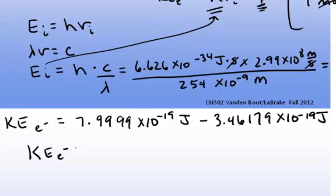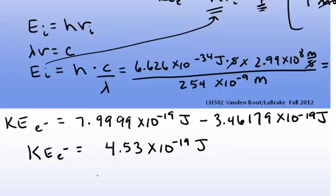The kinetic energy of the ejected electron is equal to about 4.53 × 10⁻¹⁹ joules. That's a tiny amount of energy, but it's just for one electron. If you wanted to calculate the kinetic energy for a mole of electrons, you just multiply that number back by Avogadro's number.